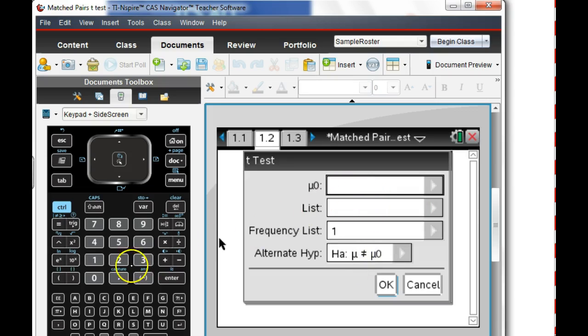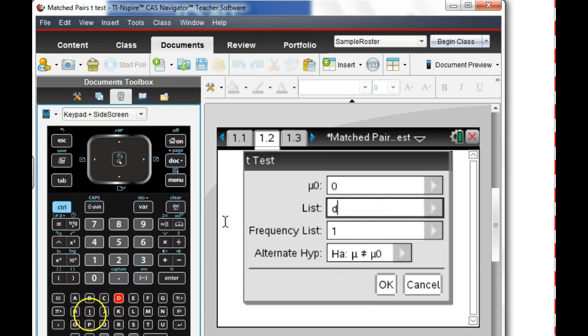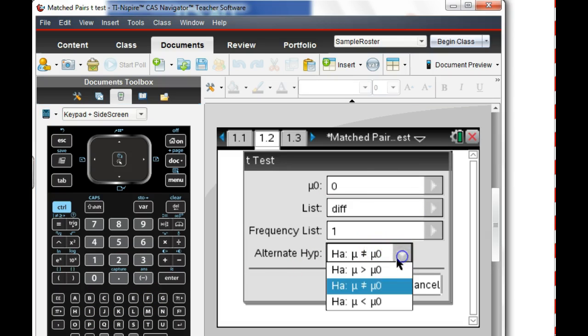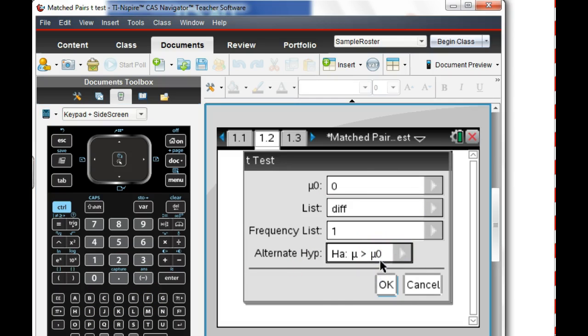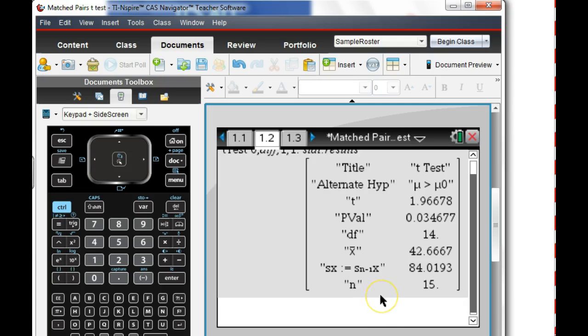And the null is always 0. The list is called diff. And the alternate is going to be greater than. So we think that's going to be 0. So we think it's greater than 0. Okay. And it gives us our data there. And you can see here the t value is 1.96. Very close to 2. P value is 0.03. So 3%. I think we're going to reject if the significance level is 5%. And so you've got all your data. You've got x bar. You've got the standard deviation there. So you want to write that down.